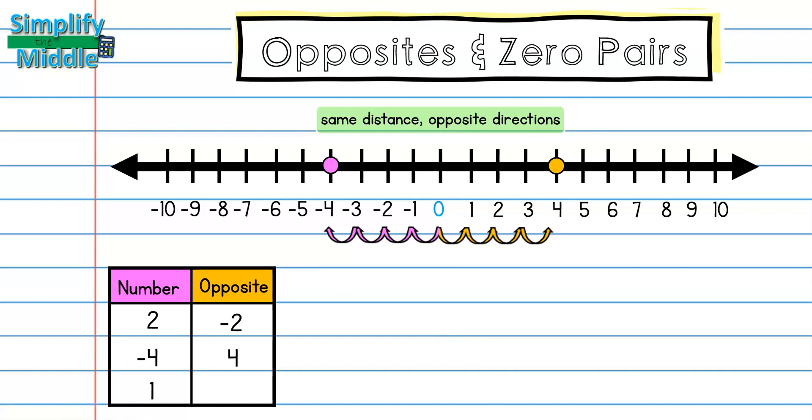You should have recognized a pattern is emerging. If my number starts as a positive, I'm going to do the opposite, which is negative. If my number starts as a negative, I'm going to do the opposite, which is positive. So my last question asks, what's the opposite of 1? Well, since I know that 1 is positive, and it is 1 to the right, I'm going to go 1 to the left, which would be negative. So the opposite is negative 1.